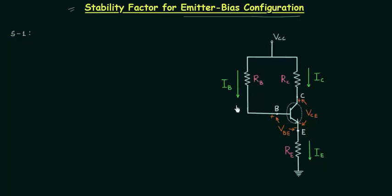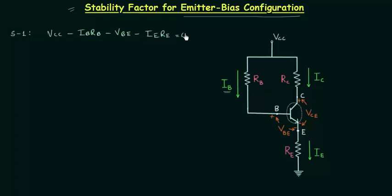From KVL we have: VCC minus IB·RB minus VBE minus IE·RE equal to zero. If you compare this equation with the equation obtained in fixed bias configuration, there is a difference of IE·RE because we have emitter resistance in the case of emitter bias configuration.